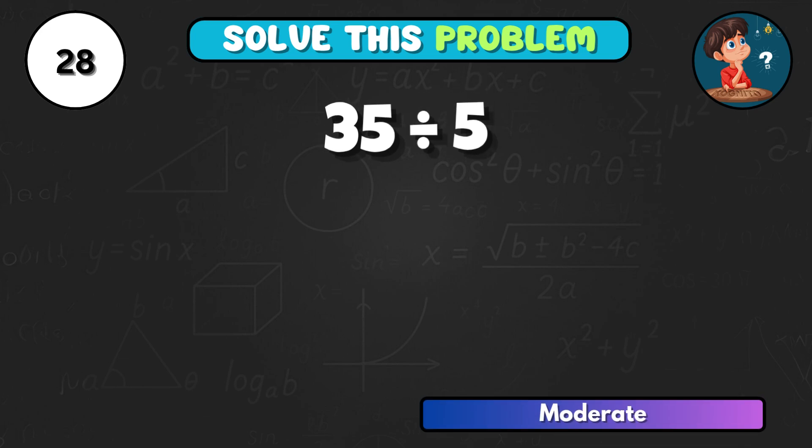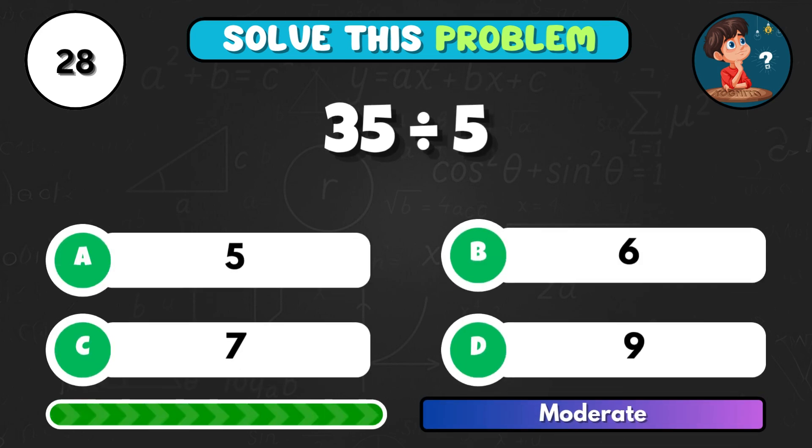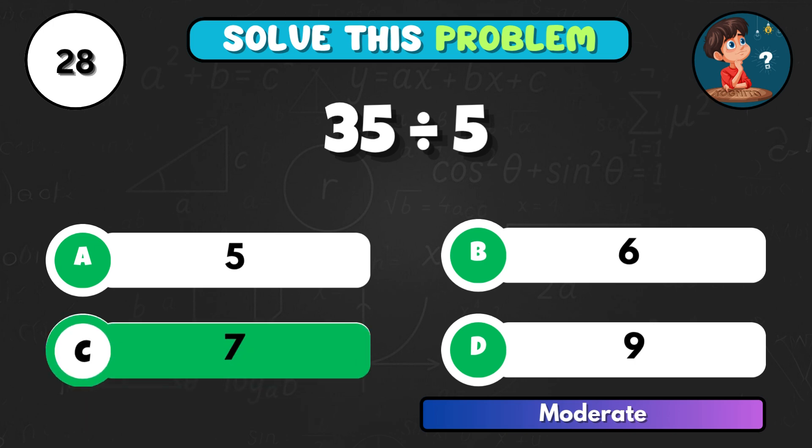Now 35 divided by 5, what do you get? Correct answer C equals 7.